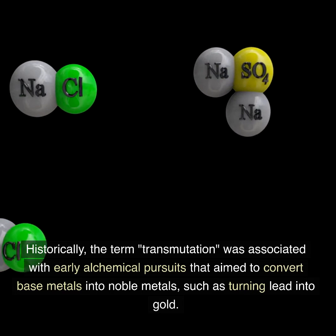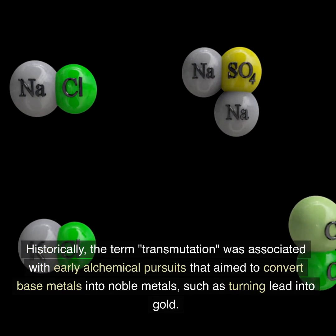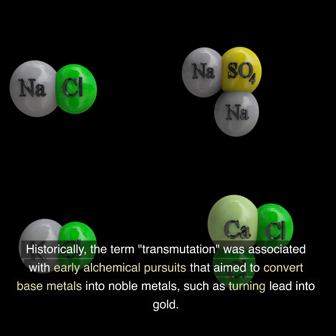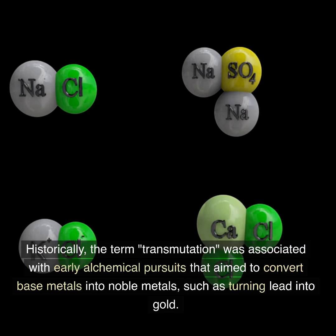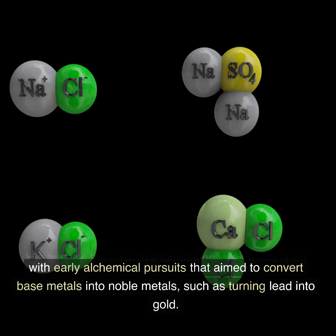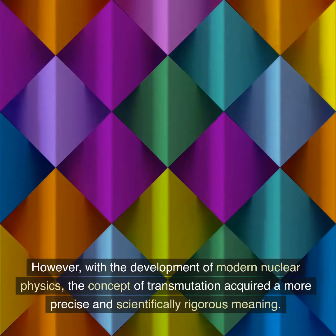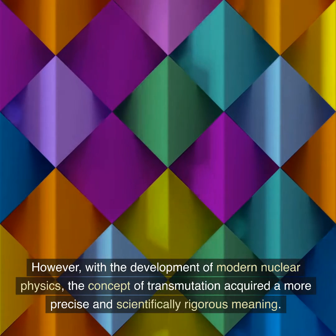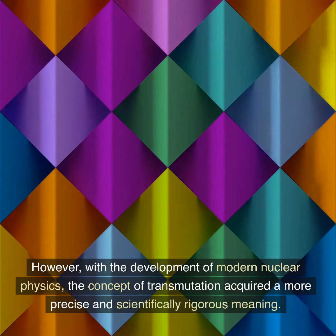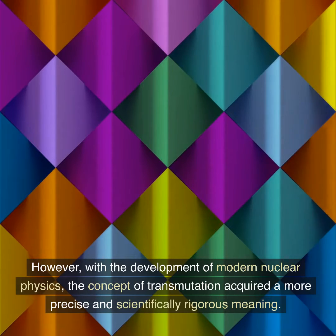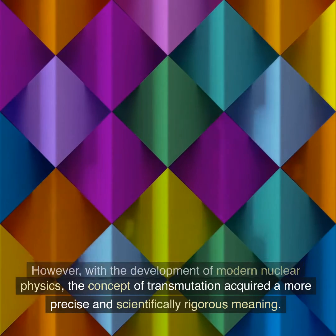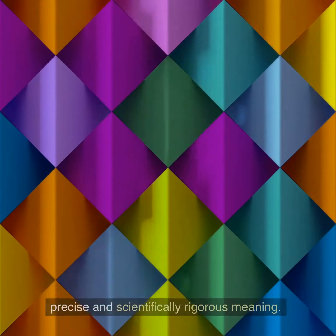Historically, the term transmutation was associated with early alchemical pursuits that aimed to convert base metals into noble metals, such as turning lead into gold. However, with the development of modern nuclear physics, the concept of transmutation acquired a more precise and scientifically rigorous meaning.